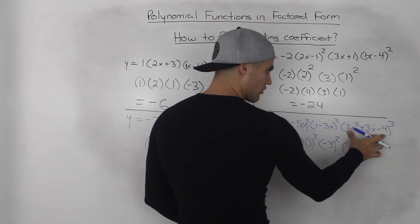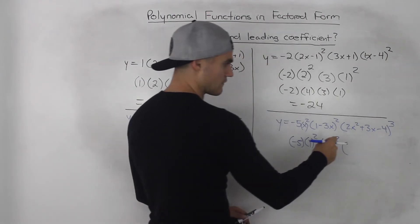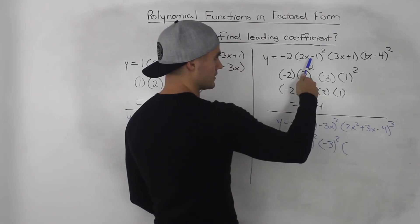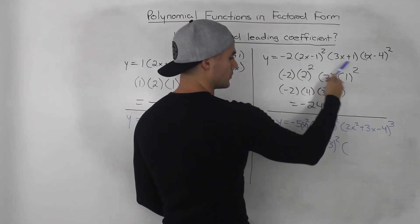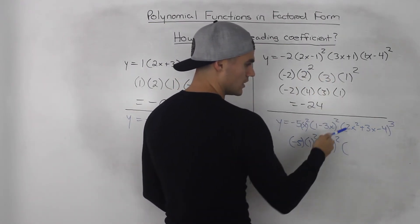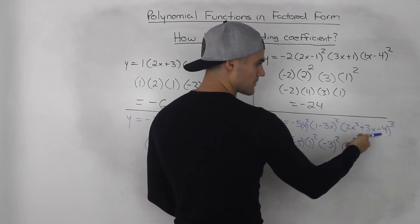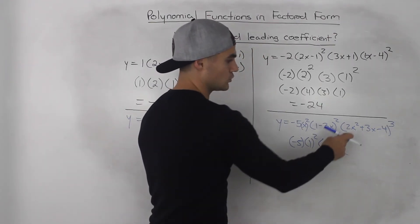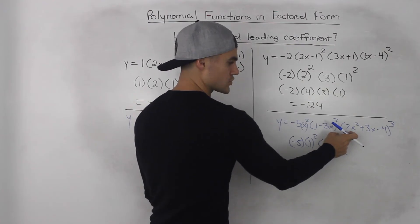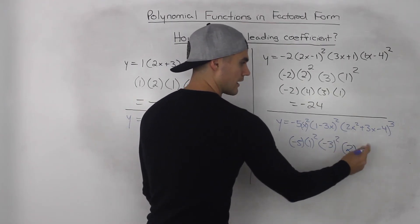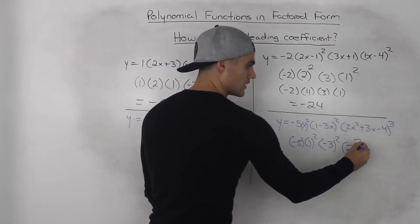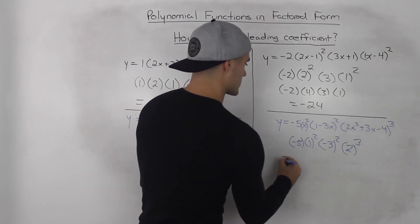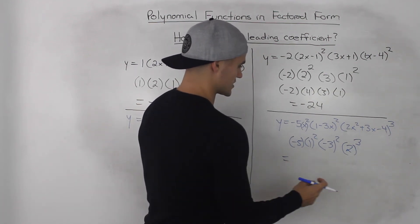Notice how in this bracket we have a larger polynomial — usually we've been dealing with binomials, but here we have a trinomial: 2x squared plus 3x minus 4, to the power of 3. Very similar to how we found the degree — you only take the leading coefficient, which is 2. And since that whole thing is to the power of 3, you take that to the power of 3.